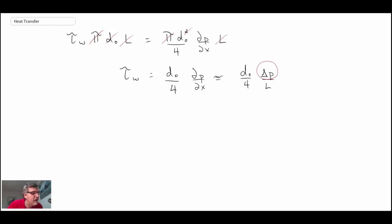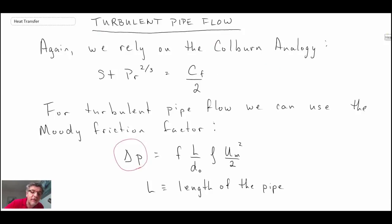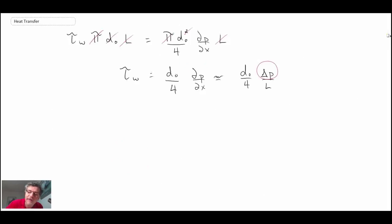Before I do that however, I'm going to look at the definition of the skin friction coefficient. And the reason why I'm doing that is because with our Colburn analogy we have the skin friction coefficient. So let's take a look at the definition of the skin friction coefficient, Cf. That is the wall shear stress divided by the dynamic pressure evaluated using the mean velocity in the pipe. Now what I can do is I can take the expression here for the wall shear stress and substitute it in for the skin friction expression.